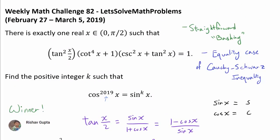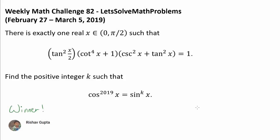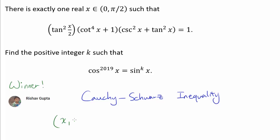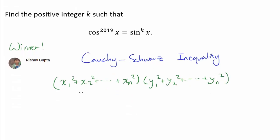Let's quickly cover the second method, which uses the equality case of the Cauchy-Schwarz inequality. To apply it, we first need to know what Cauchy-Schwarz states for real numbers. Given real numbers x₁, x₂, …, xₙ and y₁, y₂, …, yₙ, the inequality states that (Σxᵢ²)(Σyᵢ²) ≥ (Σxᵢyᵢ)².